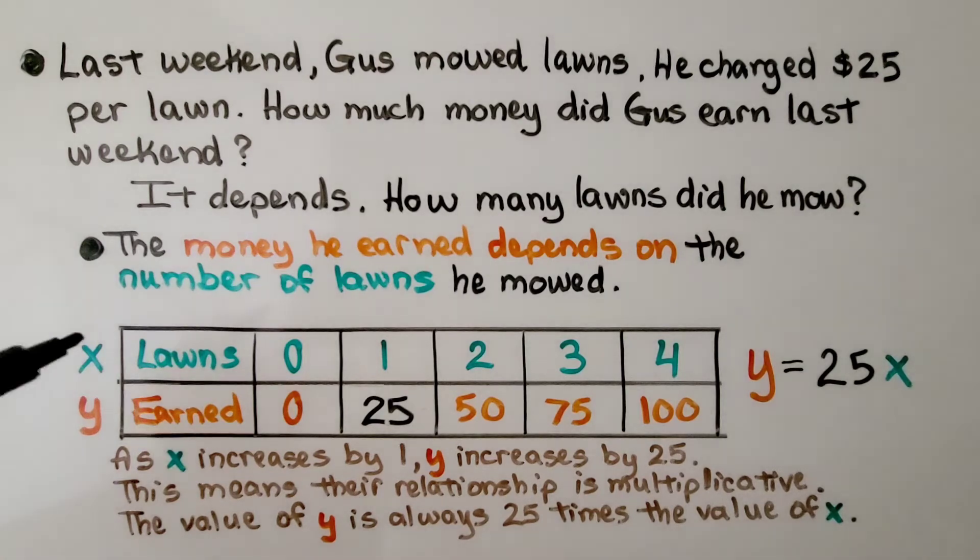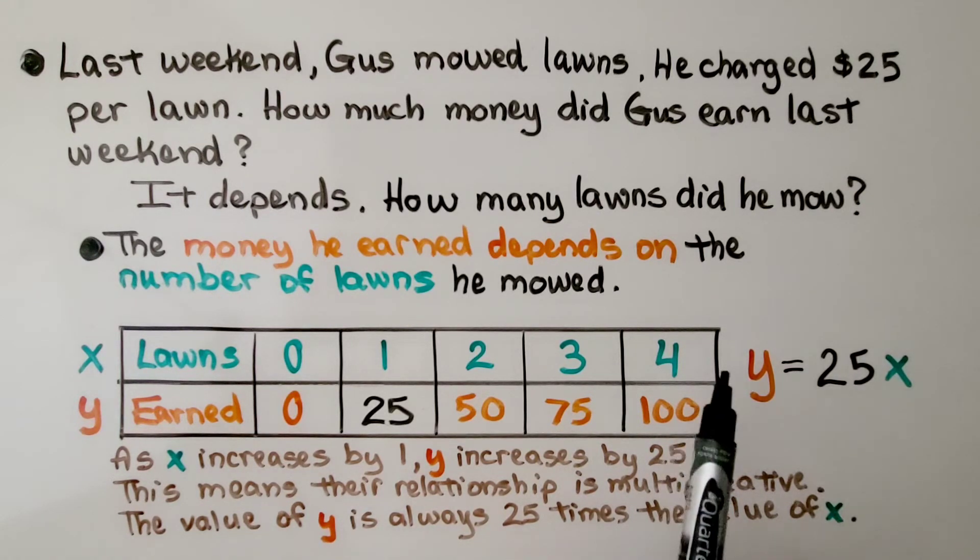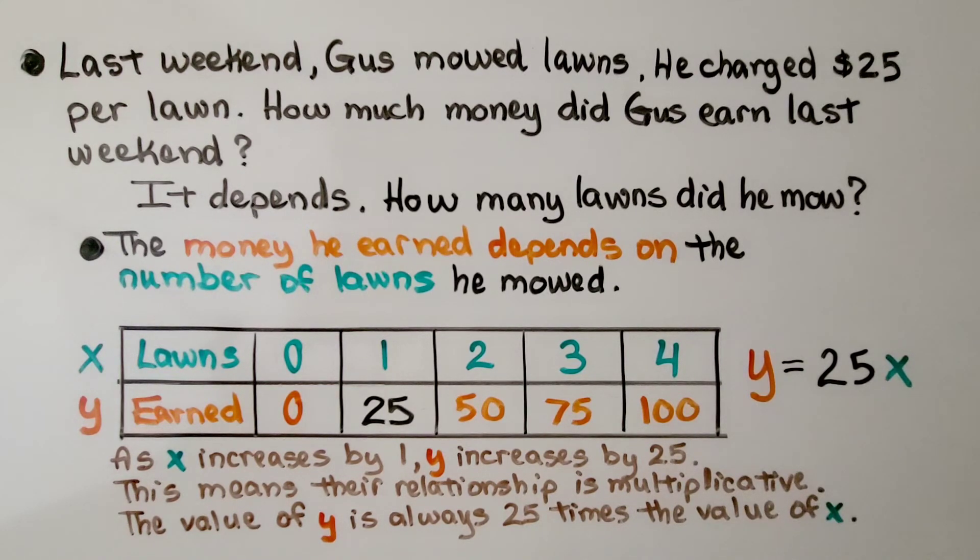We have x for the number of lawns and y for the amount earned. As x increases by 1, y increases by 25. This means their relationship is multiplicative. The value of y is always 25 times the value of x. The value of y is equal to 25x. Y is dependent. X is independent.